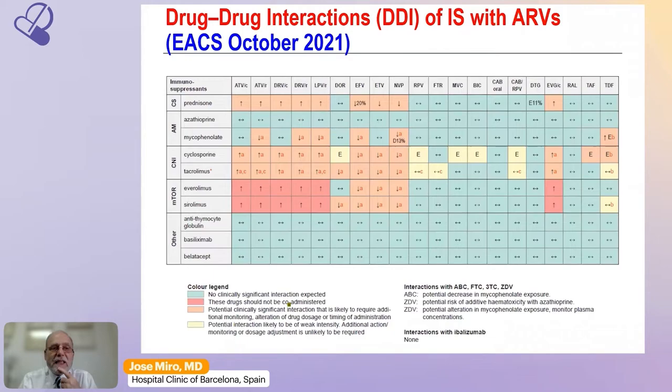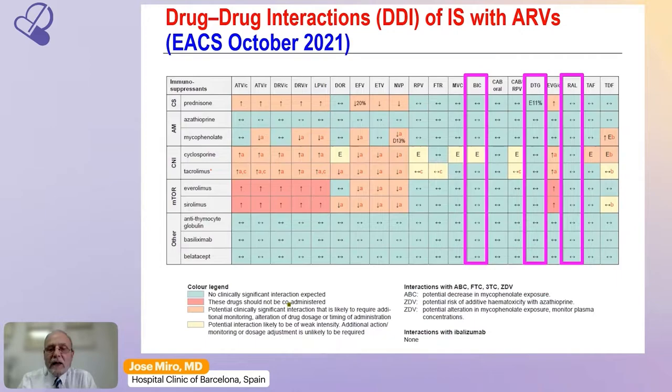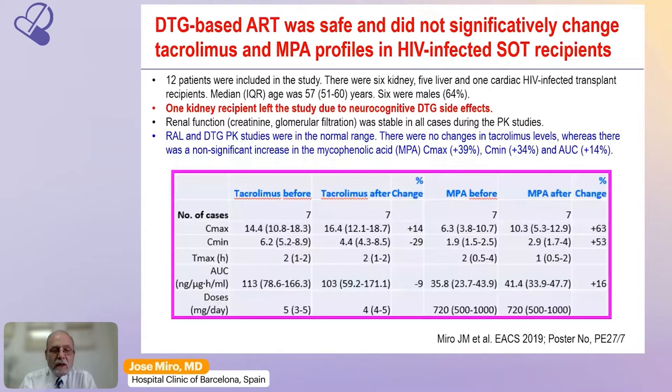Regarding drug interactions, before the integrase inhibitor era there was an important problem: with lopinavir/ritonavir, the cyclosporine dose was only 25 mg/day, whereas with efavirenz the dose needed was 10 times higher at 300 mg/day to reach the therapeutic target. This has changed with raltegravir-based ART. The preliminary French experience showed no interaction between raltegravir and calcineurin inhibitors or sirolimus, with no episodes of acute rejection. Guidelines show that raltegravir, dolutegravir, and bictegravir do not have interactions with prednisone metabolites, calcineurin inhibitors, or other immunosuppressive agents.